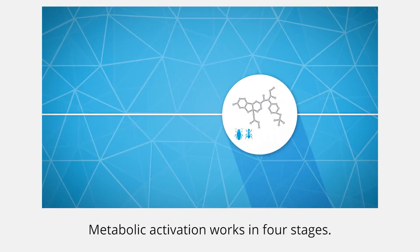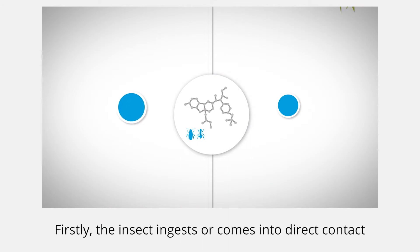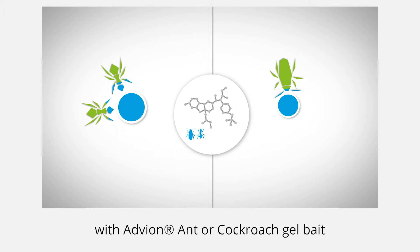Metabolic activation works in four stages. Firstly, the insect ingests or comes into direct contact with Advean ant or cockroach gelbait and incorporates indoxacarb.